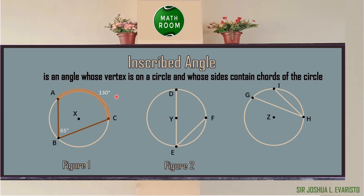On figure number 2, angle DEF is an inscribed angle and its intercepted arc is arc DF. One side of the angle is the diameter of the circle. If the measurement of the arc is 90 degrees, what is the measurement of the inscribed angle? It is 45 degrees.